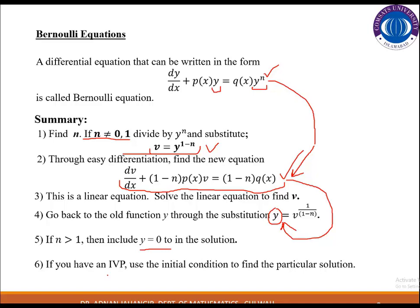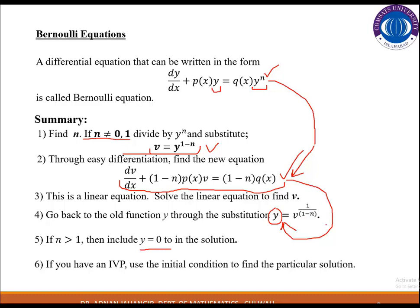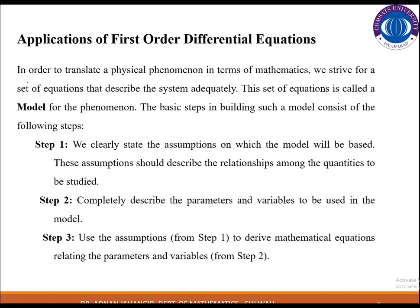If initial conditions are given in the question, we use those initial conditions to find the value of the constant that appeared because of the integration. Today's topic is related to applications of differential equations. Differential equations have many applications, but we limit our content to just two types: one is population dynamics and the second is radioactive decay. These are applications of first-order differential equations. In order to translate a physical phenomenon into mathematics, we strive for a set of equations that describe the system adequately. This set of equations is called a model of the phenomenon.